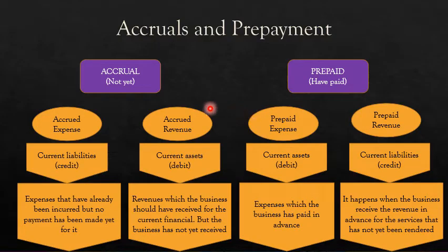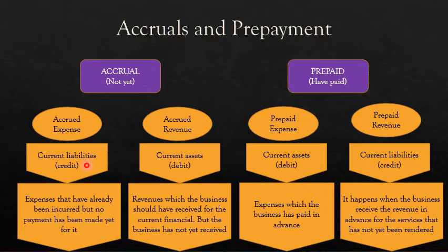By the nature of these items, for example an accrued expense: since you should have paid but you haven't paid, we classify it as an accrued liability. So it means that whenever you want to do a journal entry, you always credit accrued expense.